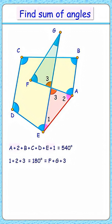Comparing it, we'll get angle 3 is getting cancelled, or F plus G is 1 plus 2. Now in our first equation, replacing 1 plus 2 with F plus G, and LHS is what we have to find - that is sum of all angles of this complex polygon - and that's equal to 540, and that's our answer.